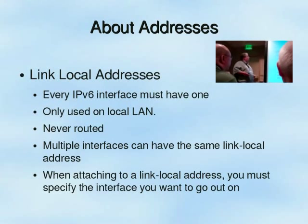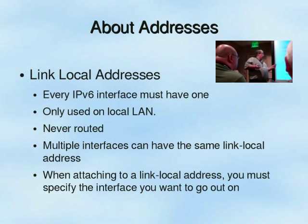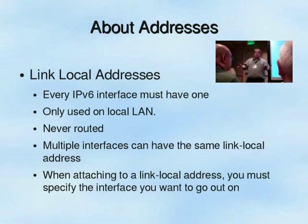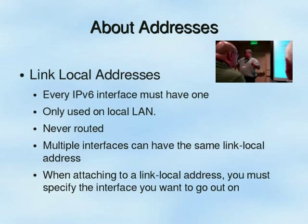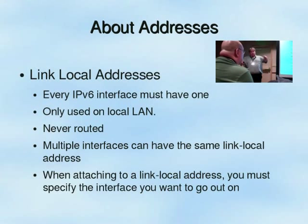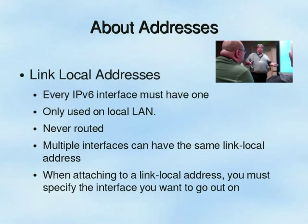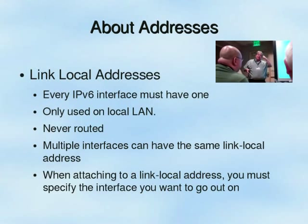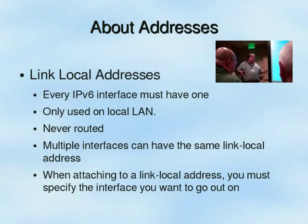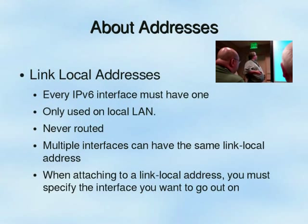There's a new address type called link local addresses in IPv6. They're designed to only communicate on the local network — a link local address will not go across routers and can only be addressed by another device on your LAN. Every IPv6 interface must have one programmed. Most systems take care of that automatically — if you do an ifconfig on a Linux system you'll always see that fe80 address, which is your link local, even if you don't have a global address. Link local addresses are only used on the local LAN and are never routed.